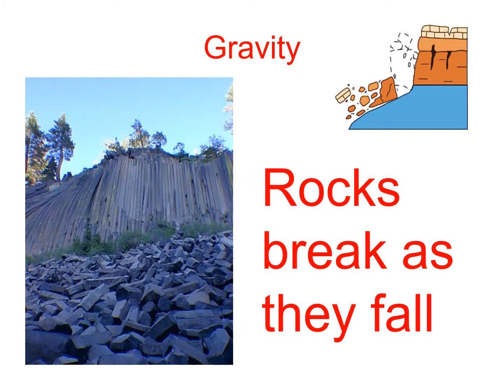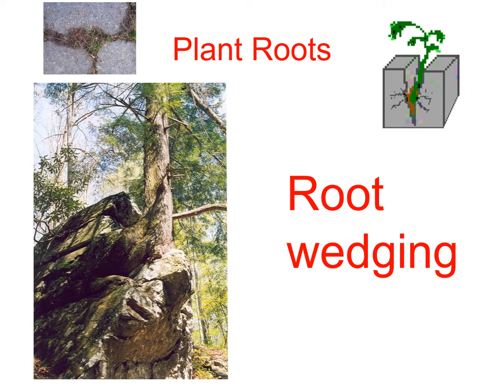Gravity is when stuff falls. So if it falls and it breaks, that's gravitational weathering. And then plant roots can also be strong enough to break rock — this is called root wedging. Wedging means when something goes between something else, so roots can do it kind of like water breaks apart the rock in ice wedging. You're going to be sending me a picture of this through social media — it's a really good example of weathering you might be able to find out in the world. You can also send me a picture of erosion or deposition.